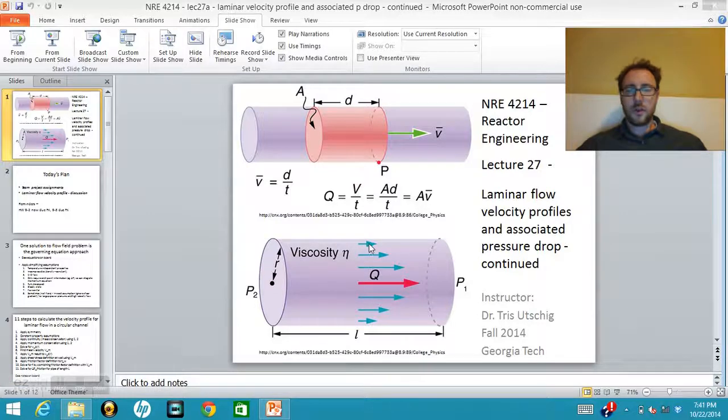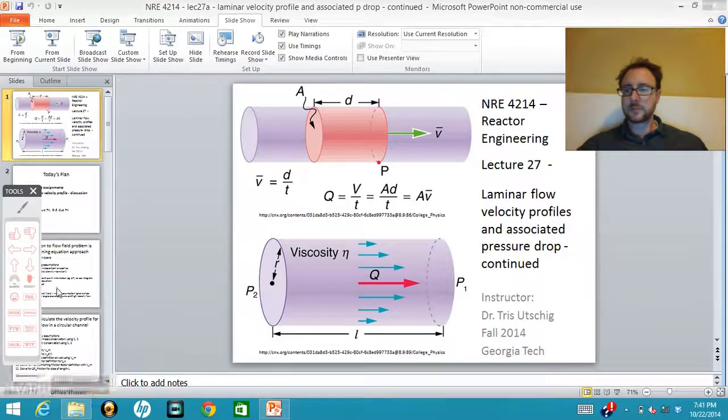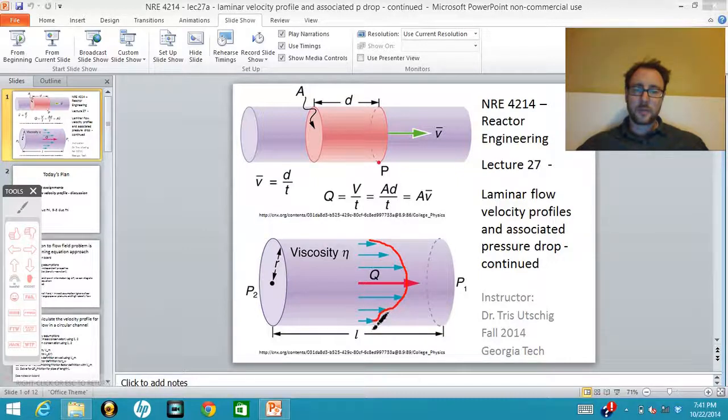Our goal for the case of a circular tube is to calculate the velocity profile which looks like this. You can see that velocity profile changes in the r direction. We're going to assume that it does not vary in the theta direction and that it does not vary in the z direction.